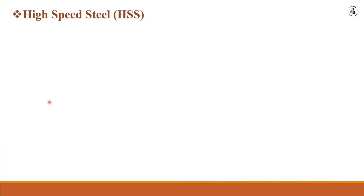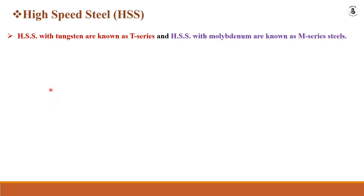High speed steel with tungsten is known as the T-series, and HSS with molybdenum is known as the M-series. When purchasing HSS tools, you can choose between T-series and M-series materials depending on your requirements. These categories are what is available in the open market.